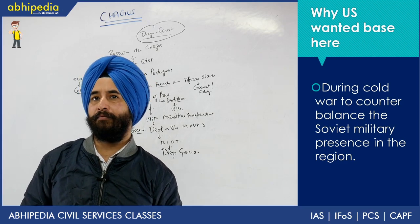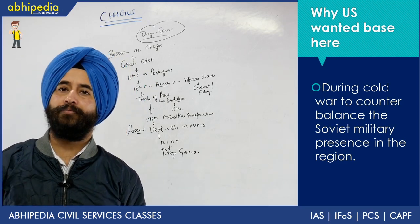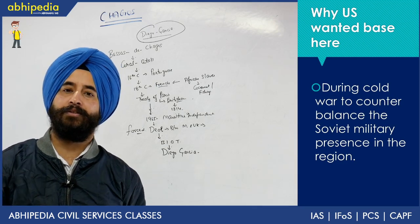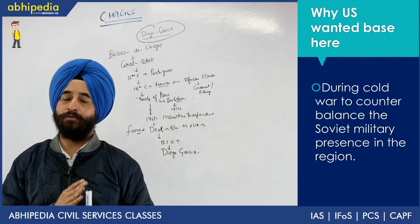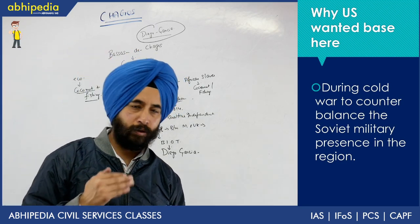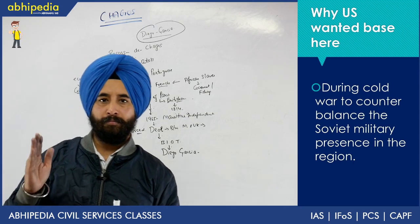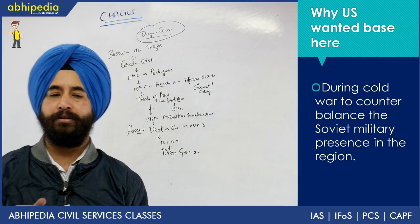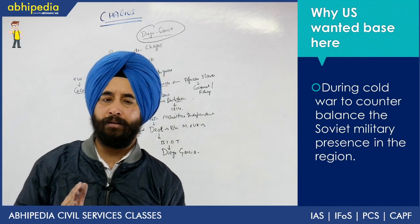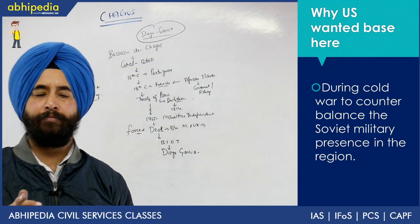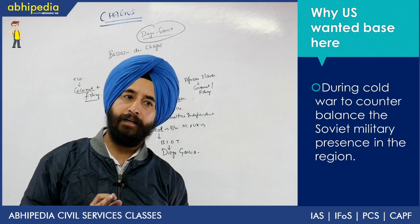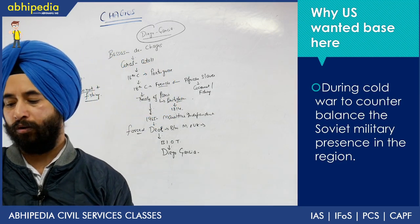Why did the US want an army base on that island? It was the period of the Cold War — between the USSR and the USA. The two worlds had become the socialist and capitalist worlds. Cold War was going on, and both sides were trying to increase their weapons and make their presence felt in every corner of the world. America tried to establish their own platform in the Indian Ocean, and they made it at Diego Garcia.